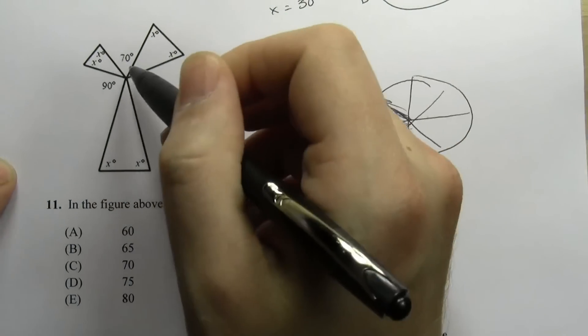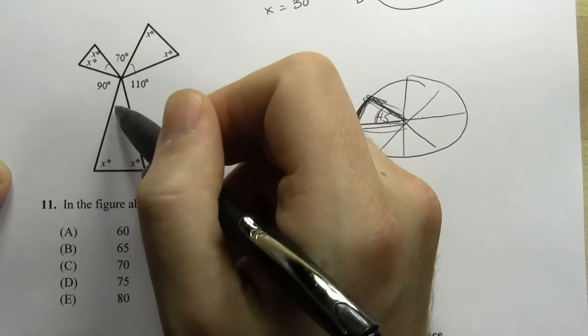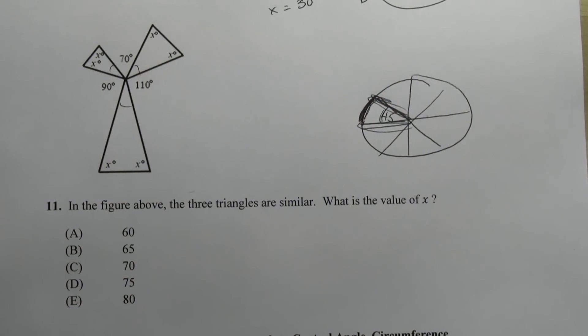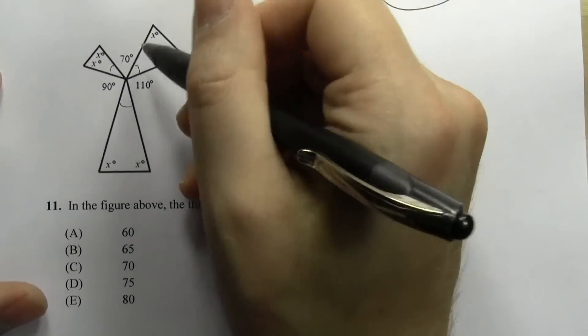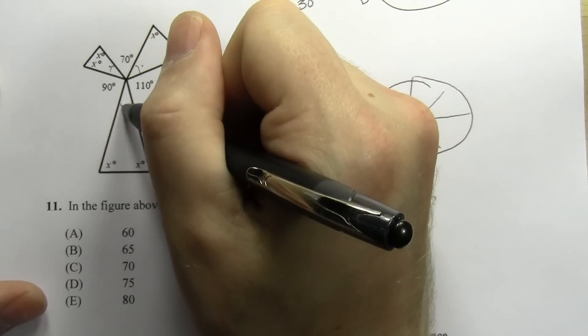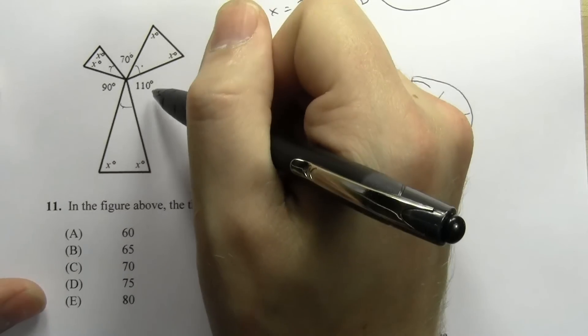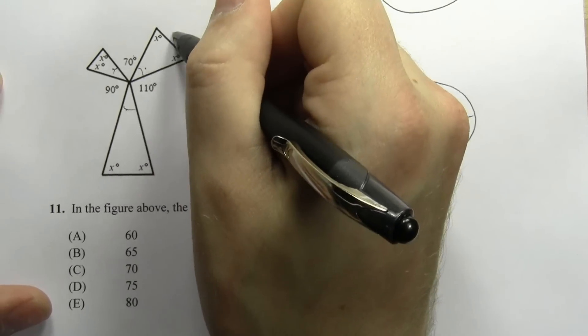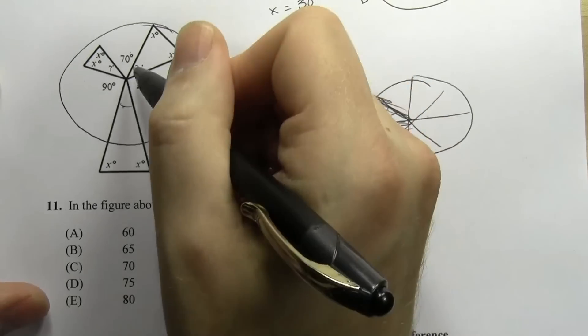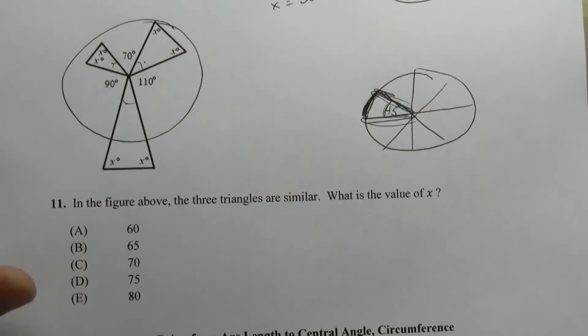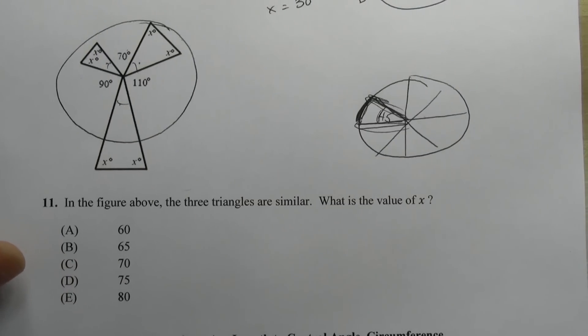So X, X, X, X, X, and then we have these other angles right here. So we're going to recognize that this angle plus this angle plus this angle plus 70 plus 90 plus 110 equals 360 because if I drew a circle right here, we'd see that these are all parts of the interior of the circle and make up the entire thing.